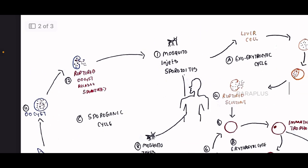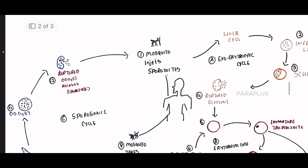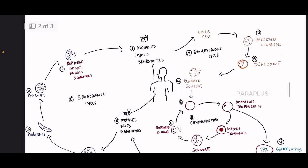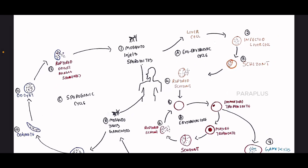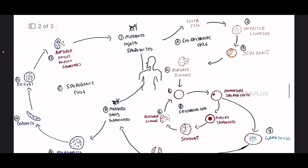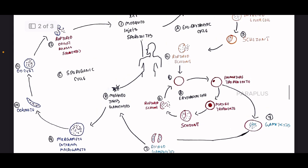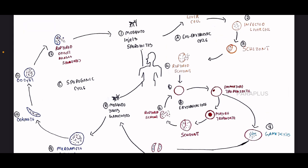Now the mosquito carries sporozoites. When this infected mosquito bites a human, it injects the sporozoites, restarting the exo-erythrocytic cycle. This is the complete life cycle of malaria.